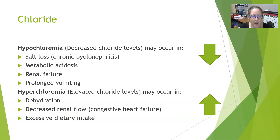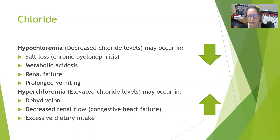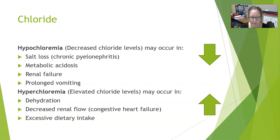Hypochloremia, or decreased chloride levels, can occur in salt loss as in chronic pyelonephritis, metabolic acidosis, renal failure, and prolonged vomiting. Many of these causes overlap with low sodium because chloride follows sodium — whatever sodium does, chloride tends to do the same. Hyperchloremia, or elevated chloride levels, also mirrors sodium: dehydration, decreased renal flow such as in congestive heart failure, and excessive dietary salt intake — since table salt is sodium chloride — can all cause elevated chloride.